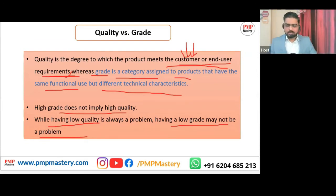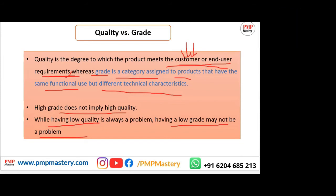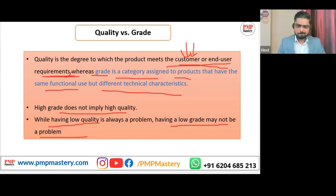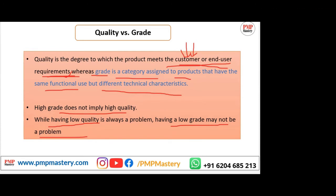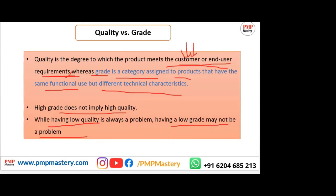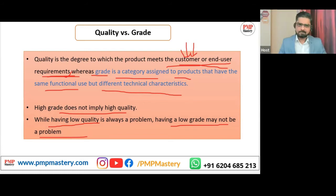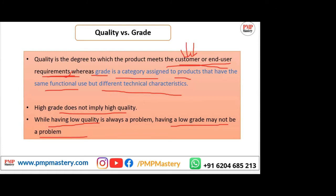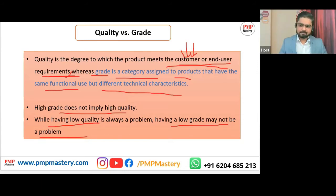Suppose the end user is your grandmother and she wants to use a phone just to call someone. Her requirement is only a phone with number pads so she can use it easily. But if you give her a touchscreen phone, it technically meets the requirement of being a phone, but it is difficult for her to operate. The quality is good but the grade is so high that nobody is happy with that.